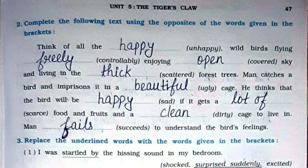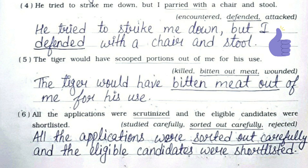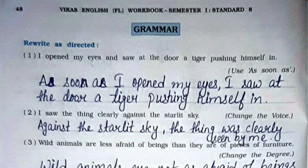Word Power, Question 2: Complete the following text using the opposites of the words given in brackets. The answers are: happy, freely, open, thick, beautiful, happy, a lot of, clean, and fails. Question 3: Replace the underlined words with the words given in the brackets. 1. I was surprised suddenly by the hissing sound in my bedroom. 2. God gives us such recollections with a view to save us at critical moments. 3. Evidently he didn't like his meal to be so completely disappeared. 4. He tried to strike me down but I defended with a chair and stool. 5. The tiger would have bitten meat out of me for his use. 6. All the applications were sorted out carefully and the eligible candidates were shortlisted.